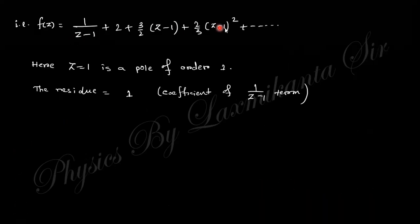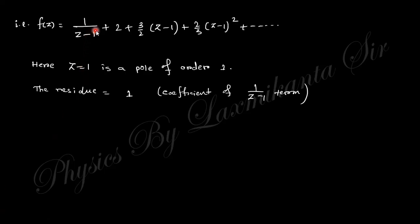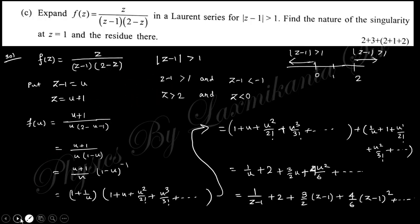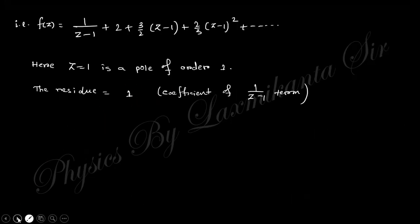This is the Laurent series. Here you can see that at z = 1 there is a pole of order 1, since the power is 1. The residue is 1 because the coefficient of (z − 1)⁻¹ is 1. So this is the answer to this question.